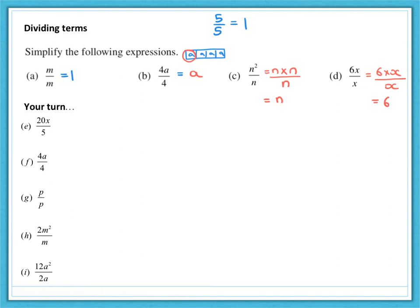So, part E, 20X divided by 5, that's going to give you 4X. Part F, 4A divided by 4 is going to give you an answer of A. G, P divided by P will give you an answer of 1. Now, 2M squared is 2 lots of M times M, and you're dividing by M. So, effectively, you're cancelling down your fraction by M and M, which leaves you an answer of 2M.